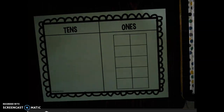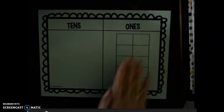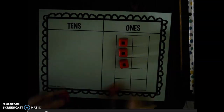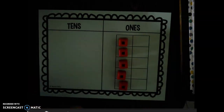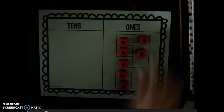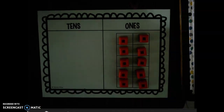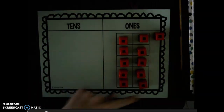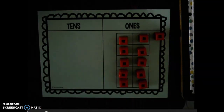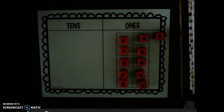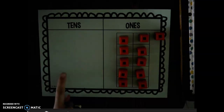First, I'm going to count out all 11 cubes and put them in my ones area: one, two, three, four, five, six, seven, eight, nine, ten. They filled up all ten, but I need one more, so I'll put it to the side. If you look right here, do I have all ten filled up in my ten frame? Yes, I do. So what I'm actually going to do with all ten of these is put them together to create a tens rod, and then move that tens rod into my tens area.